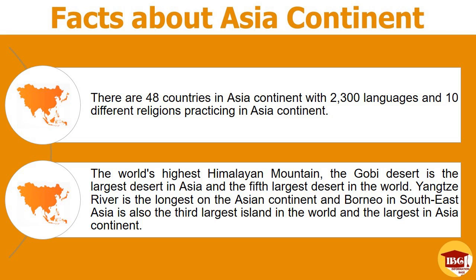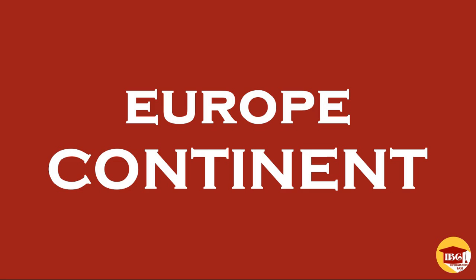In addition, the world's highest Himalayan mountain and the Gobi Desert is the largest desert in Asia and the fifth largest desert in the world. Moreover, the Yangtze River is the longest river on the Asian continent, and Borneo in Southeast Asia is the third largest island in the world and the largest in Asia continent.